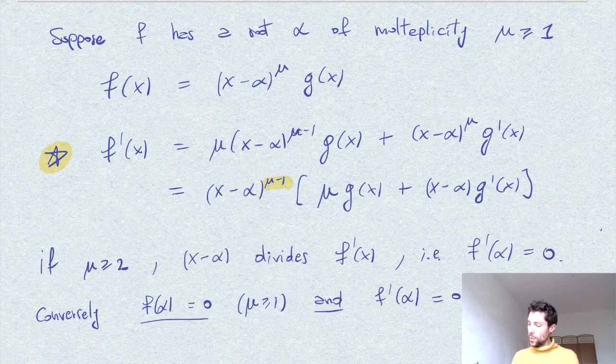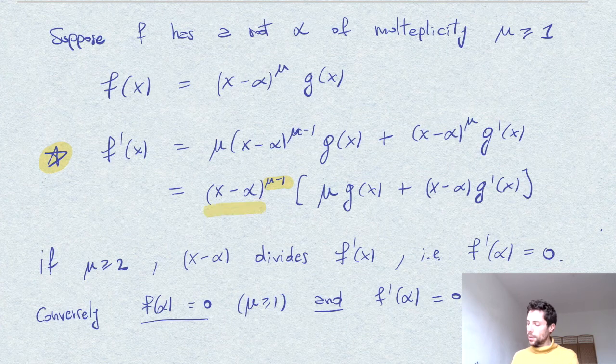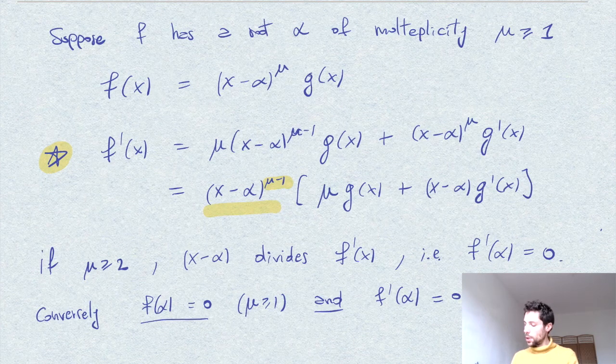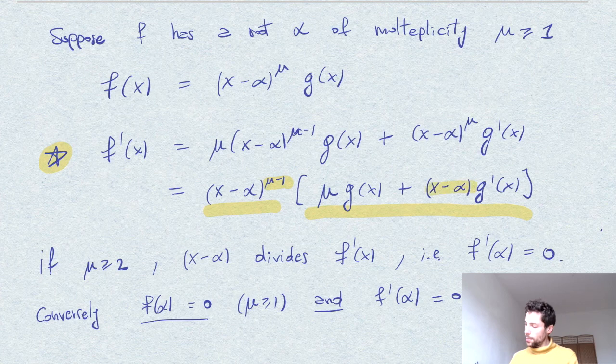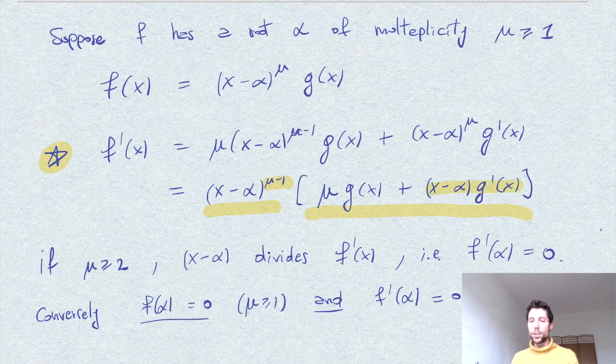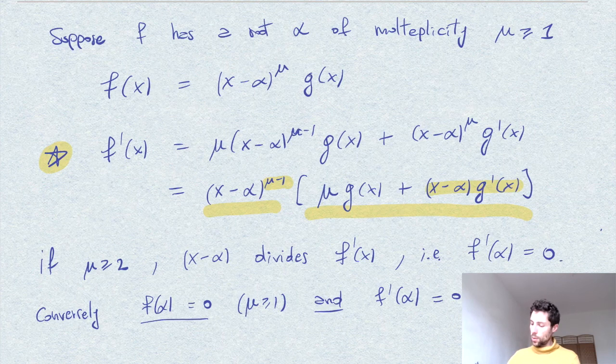then this part would be equal to one here. And by substituting alpha for f prime of x, we see that, well, this would disappear, and then we would have mu times g of alpha, which is non-zero. And so this would be a contradiction.